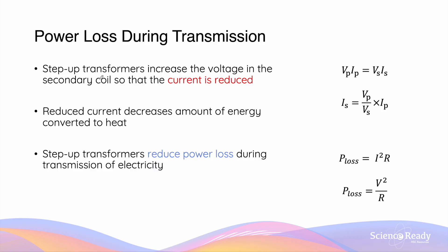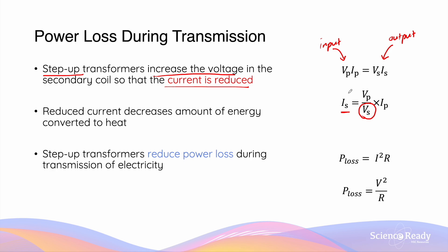The inevitable power loss due to long distance transmission is where step-up transformers come into play. A step-up transformer increases the voltage in its secondary coils and decreases the currents that flow through them. For an ideal transformer, the electrical power input in the primary coils equals the power output in the secondary coils. So if we increase the voltage across the secondary coils by using a step-up transformer, the current flowing through the secondary coils will be greatly reduced, because the secondary current is inversely proportional to the secondary voltage.